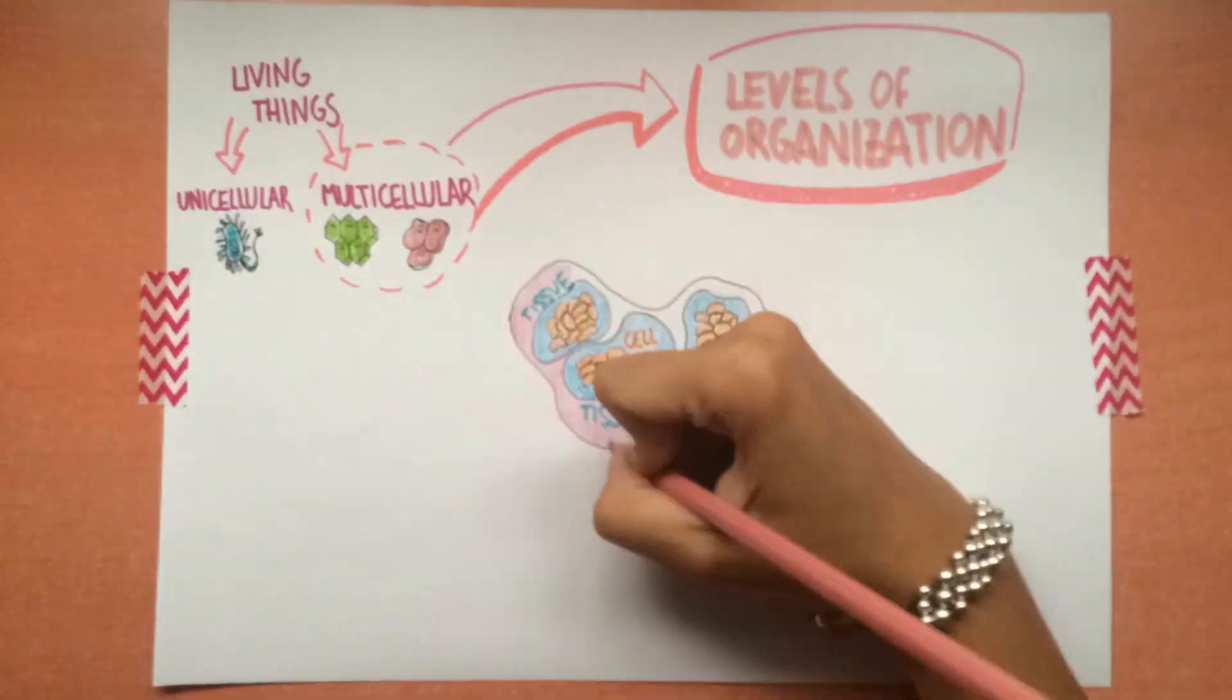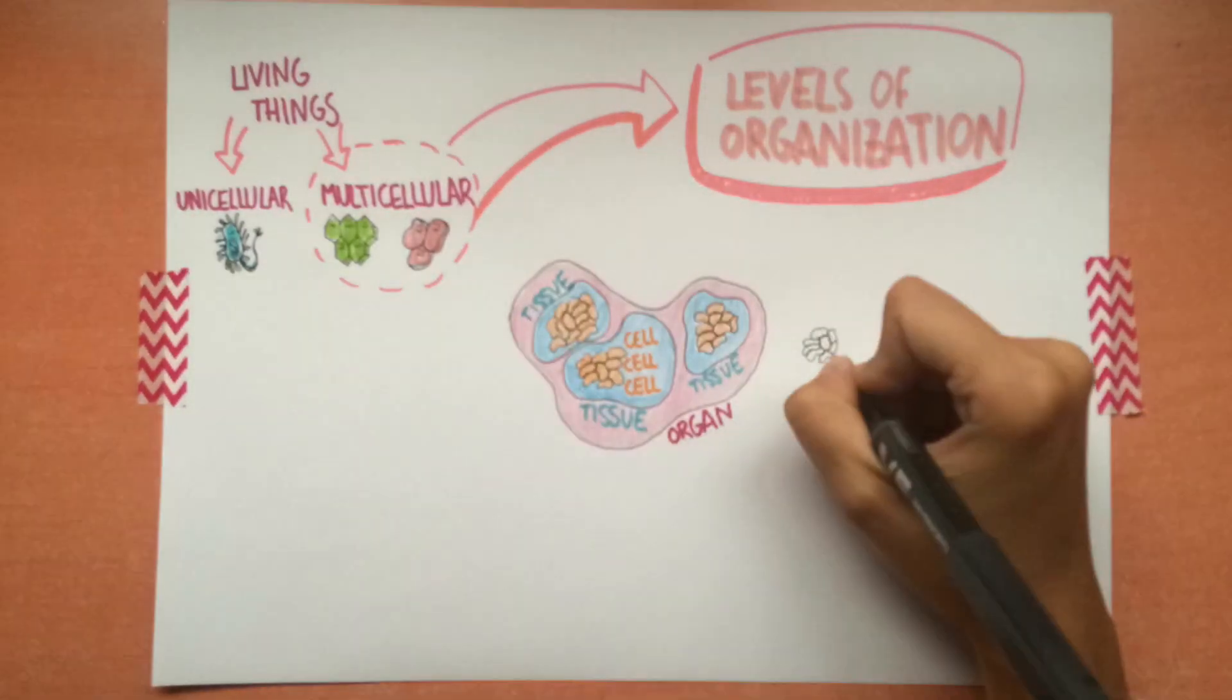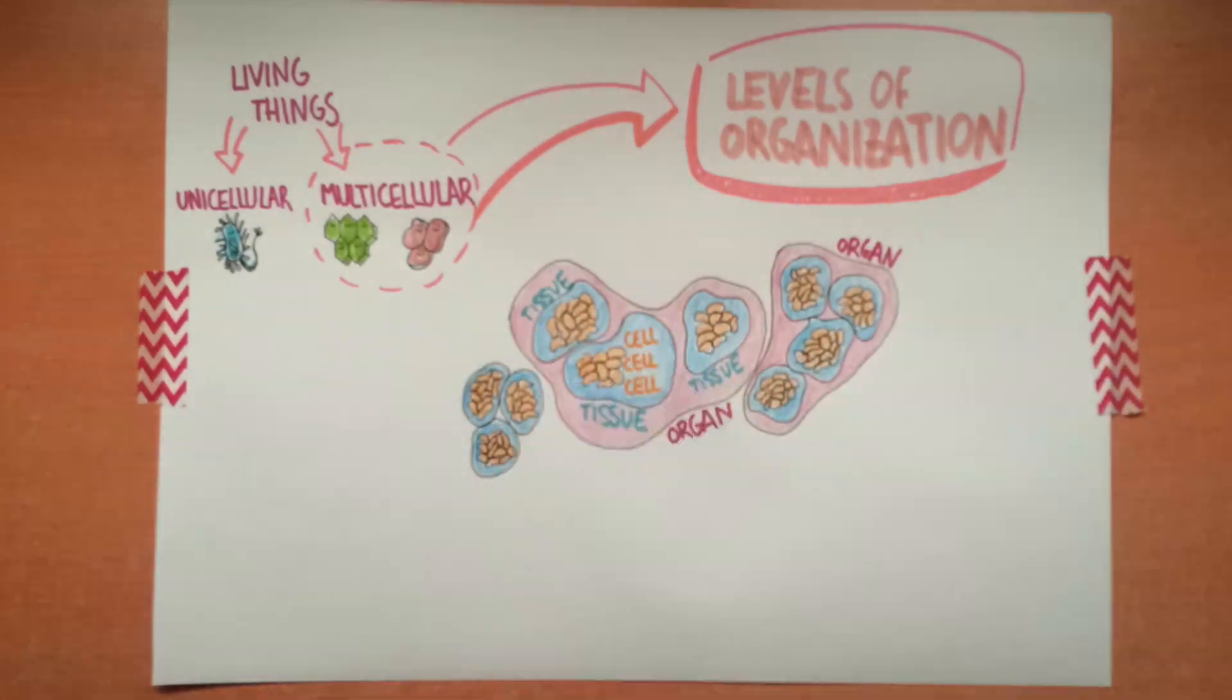When tissues join together, they form an organ. A group of different organs working together makes up a system.